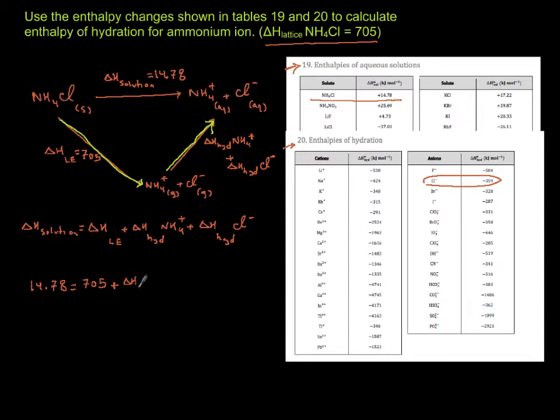Let's put values. Solution is 14.78 equals 705 plus Delta H hydration of ammonium plus Delta H hydration of chloride, which is minus 359. So 14.78 is equal to - I'm going to add these two quantities first, which is 346, plus Delta H hydration of ammonium.